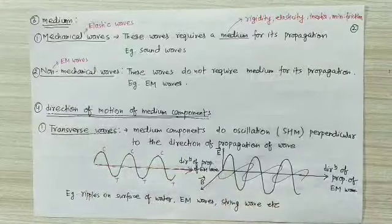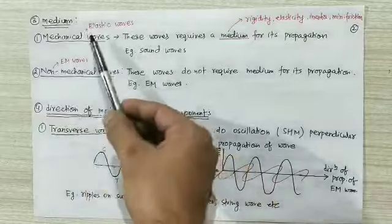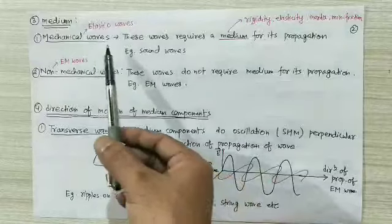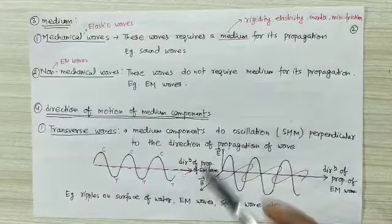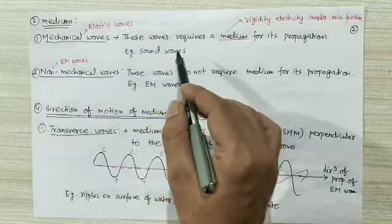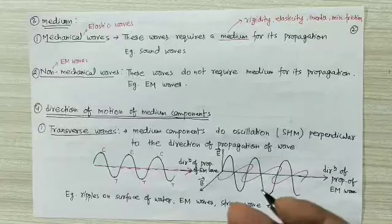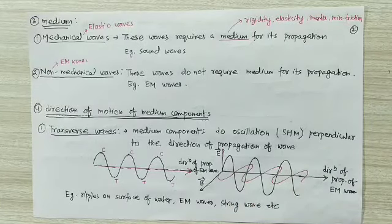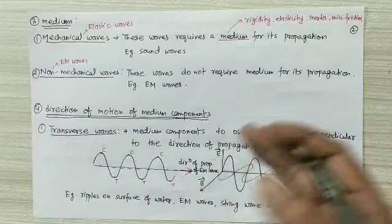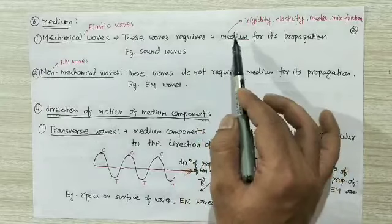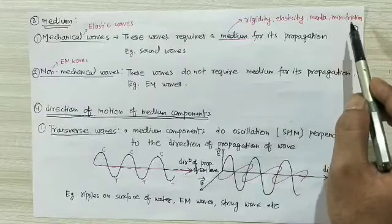The classification of waves on the basis of medium required: waves are classified into two types — mechanical wave and non-mechanical wave. Mechanical waves are also known as elastic waves; non-mechanical waves are also known as electromagnetic waves. Mechanical waves require a medium for propagation. Example: sound wave — without a medium, this wave cannot travel. Air is the medium for sound wave. If someone speaks in a place where vacuum exists, the listener will not hear the speaker. If no medium is there, mechanical waves cannot travel.